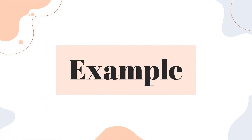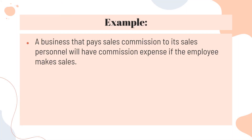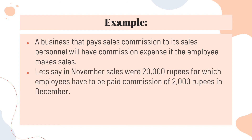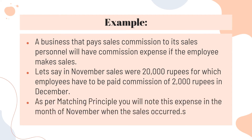Let's look at an example. Let's say your business pays commission to its employees whenever they make a sale. In November, your sale was 20,000 rupees, and in exchange you had to pay a commission of 2,000 rupees. But those 2,000 rupees were to be paid in December. However, this expense belongs to November, so you will record it as an expense in November in your accounts.